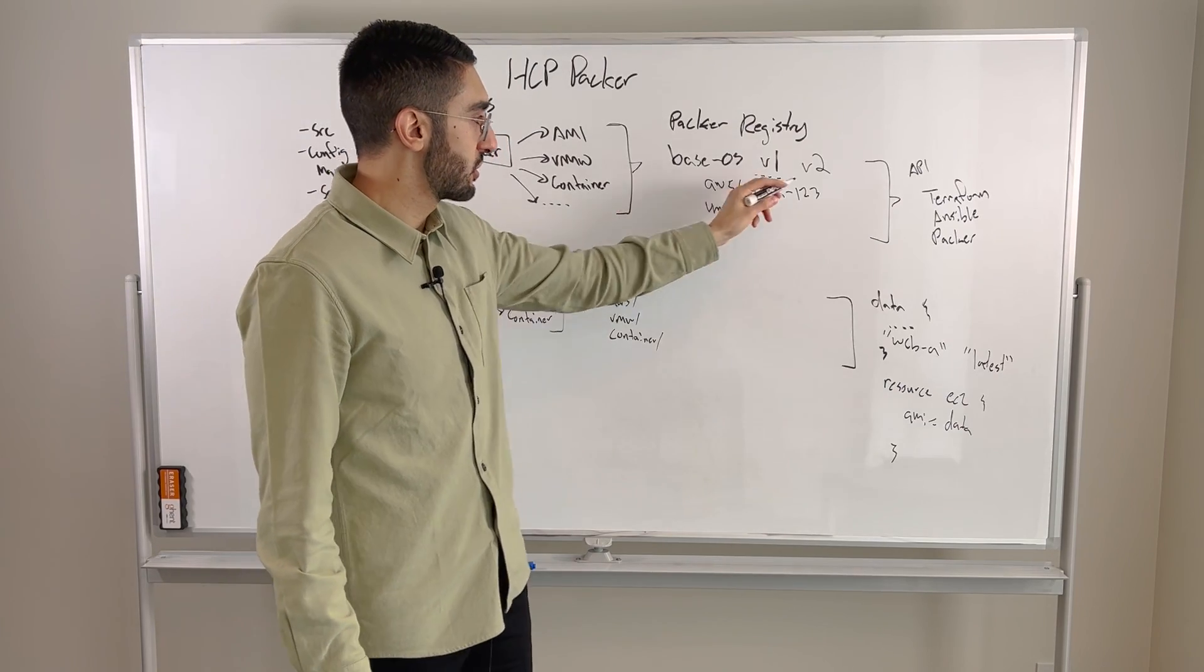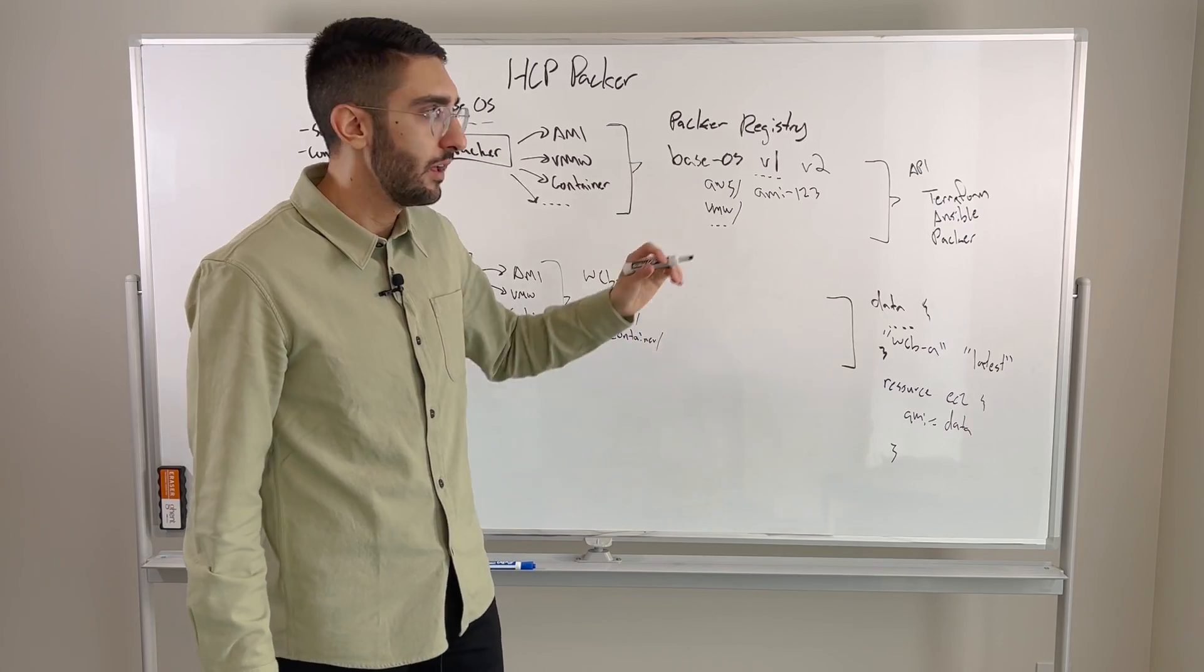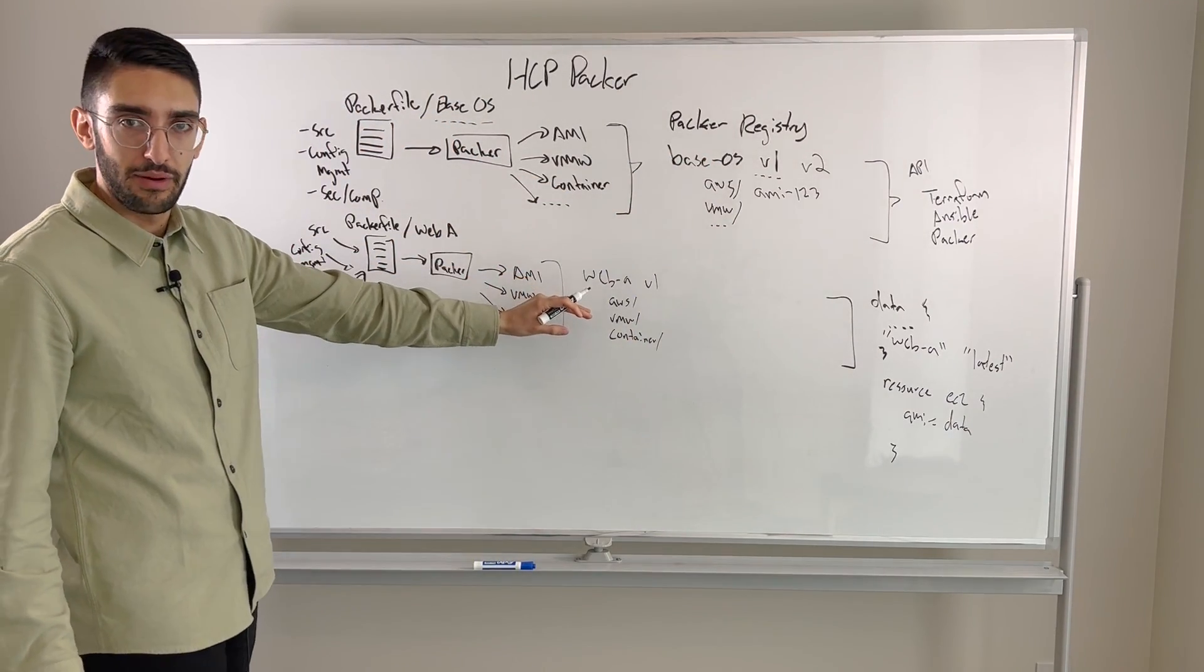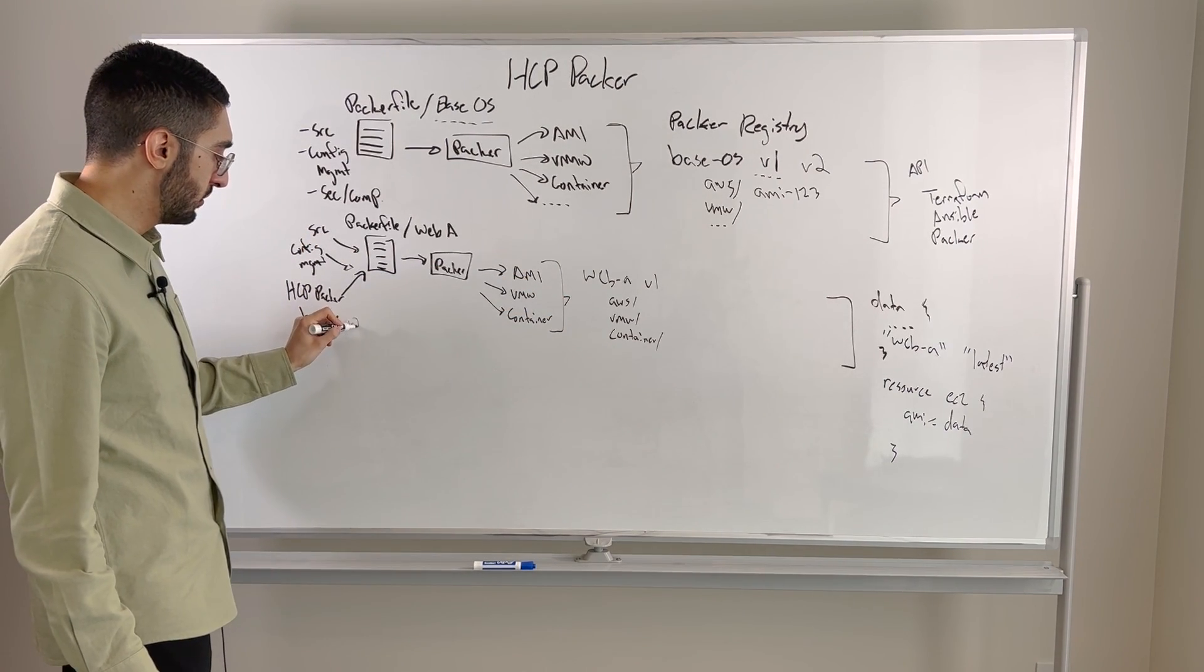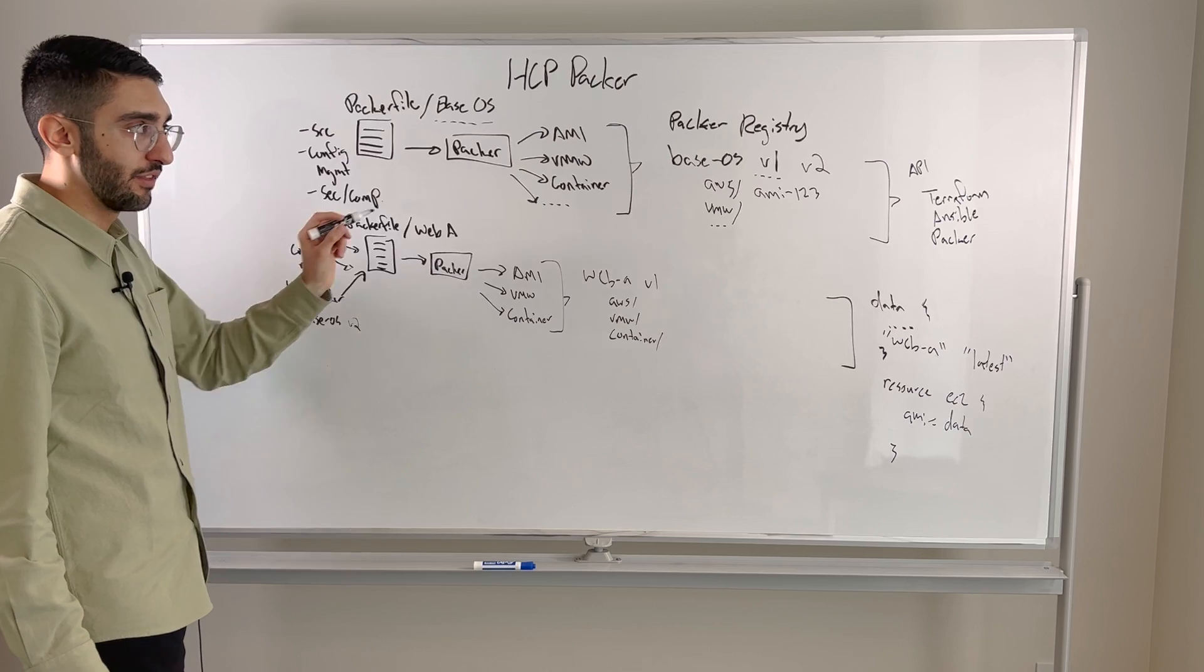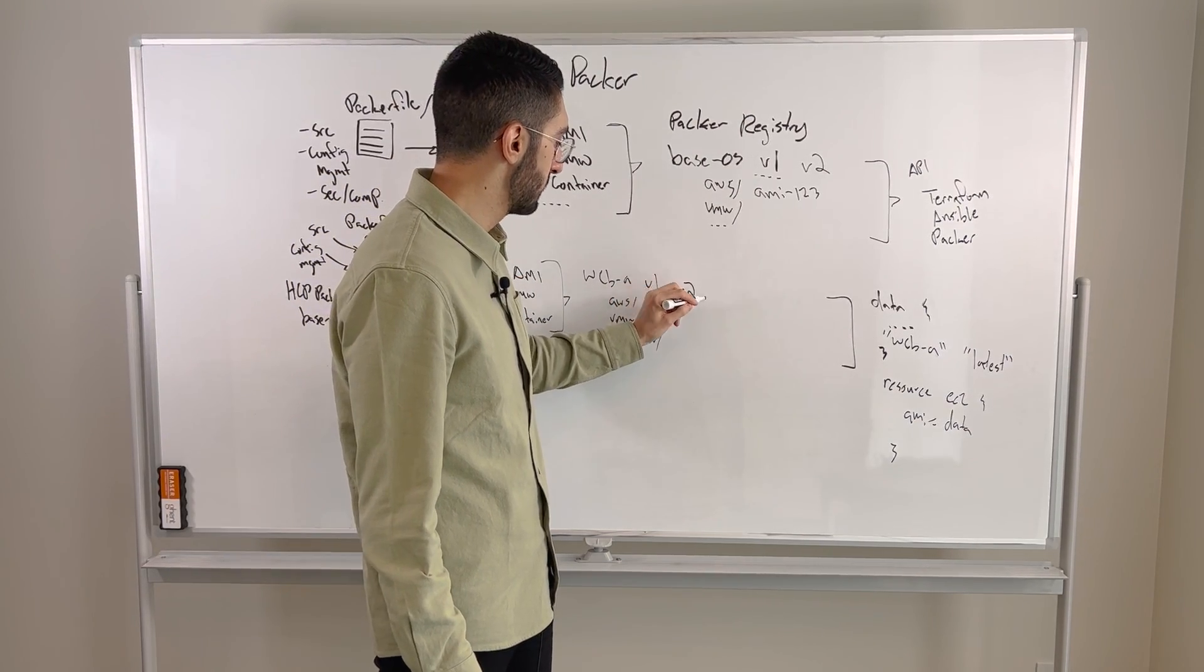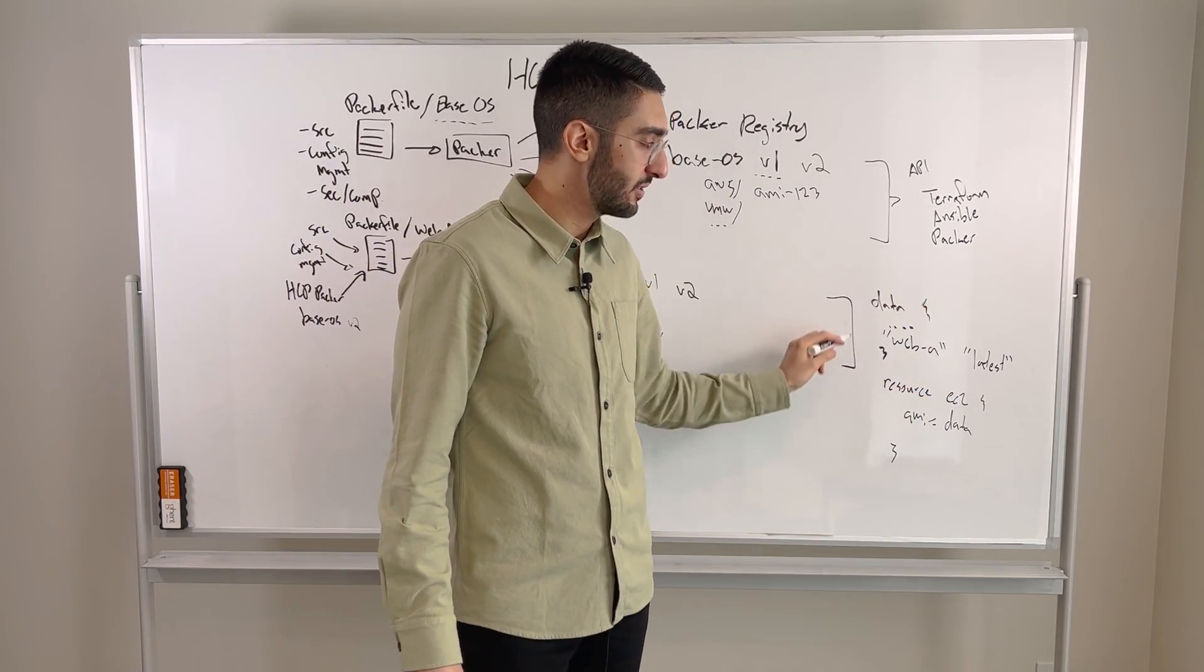And what we'll publish now is a version 2 of that base image. That version 2 will have a different set of all of these identifiers because the AWS AMI will be different, and so forth. That then allows us to come and re-execute this pipeline in an automated way. So this web A pipeline is now going to pick up the version 2 of that base image rather than the version 1. So we'll redeploy this and generate a set of version 2 images for our web application server.